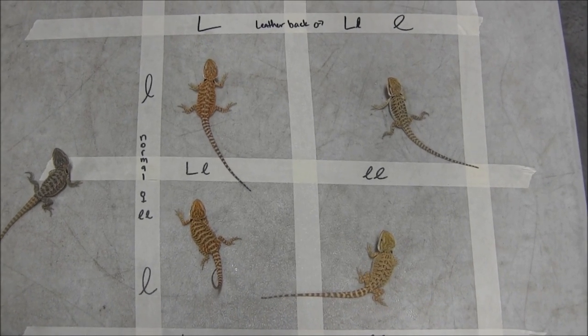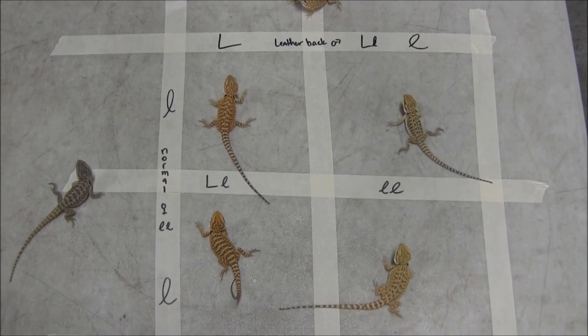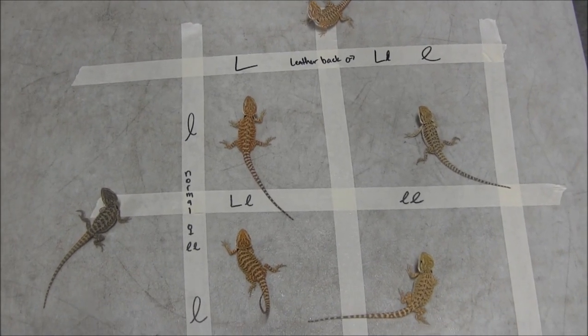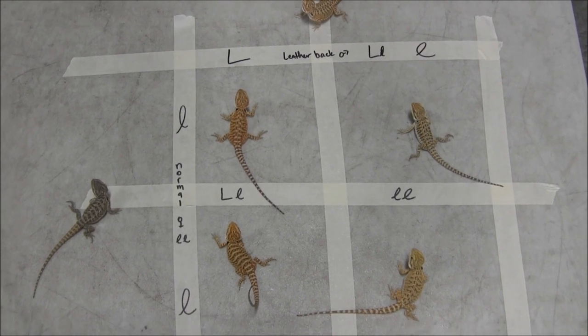And that's it. That's all you have to do to make a Punnett square. It really is that simple. We have several books that have great tutorials on how to do them for things like ball pythons, corn snakes, even leopard geckos.